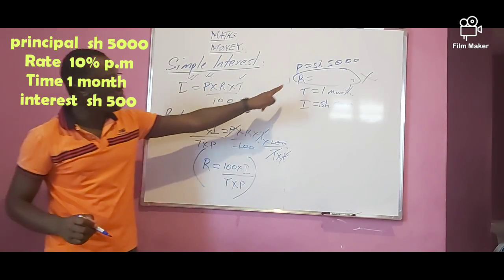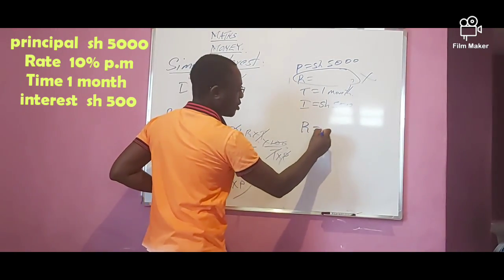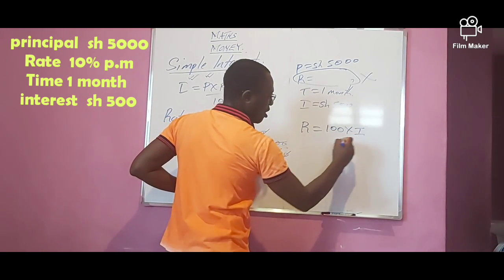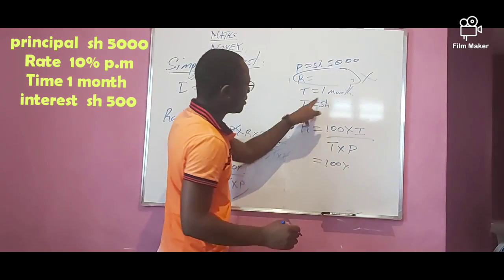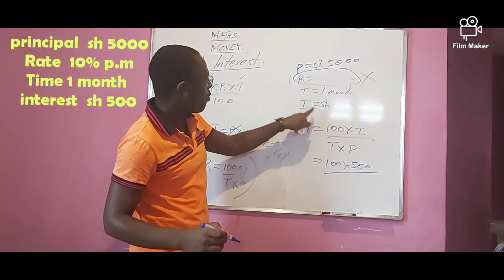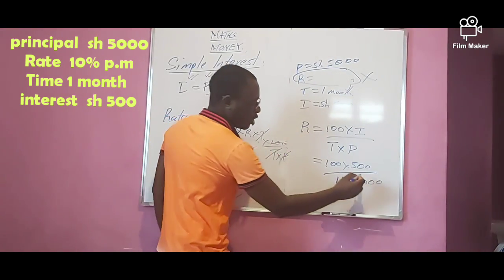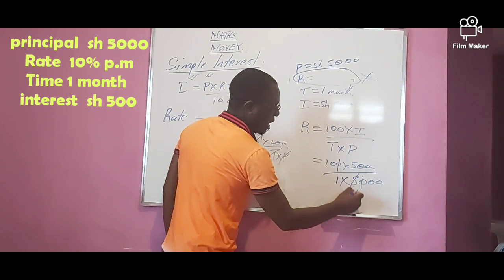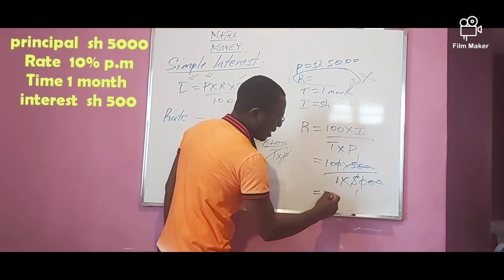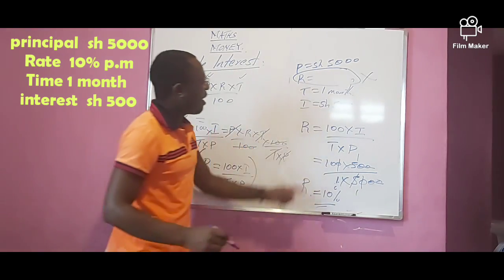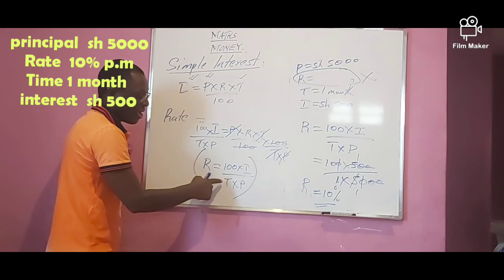Cancelling the zeros — two zeros here, one zero there — we remain with 1 times 10, and the answer is 10. We had 10% originally, and there it is confirmed. So the formula for finding the rate is: rate equals 100 times interest over time times principal.